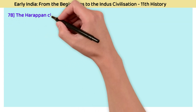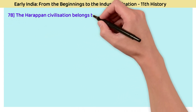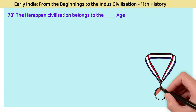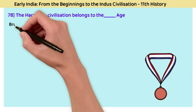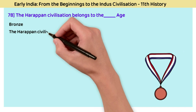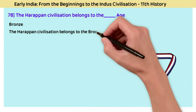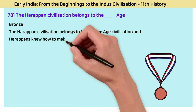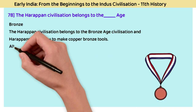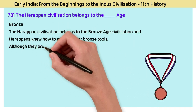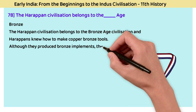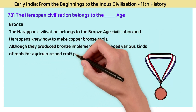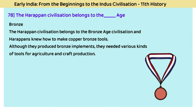Question 78: The Harappan civilization belongs to which age? The answer is the Bronze Age. The Harappan civilization belongs to the Bronze Age, and Harappans knew how to make copper and bronze tools. Although they produced bronze implements, they needed various other kinds of tools for agriculture and craft production.